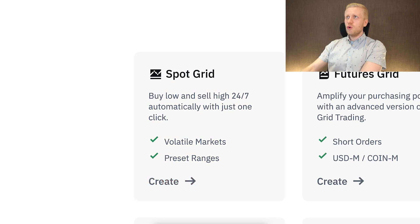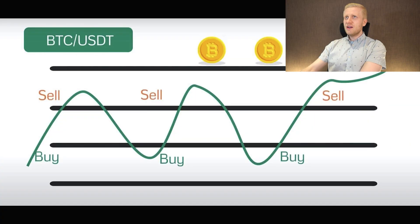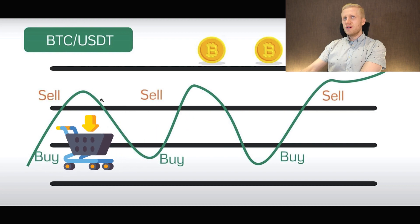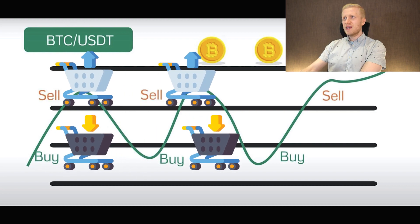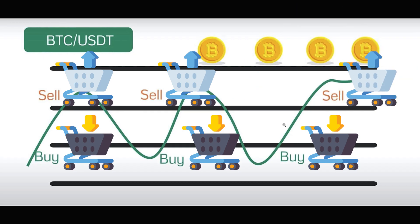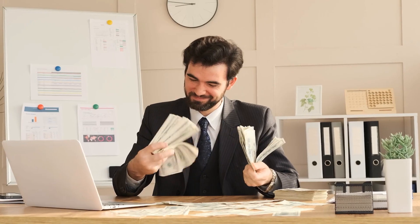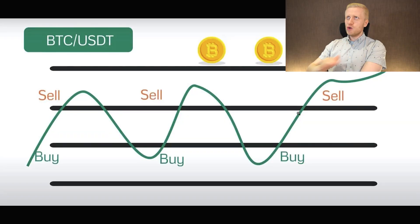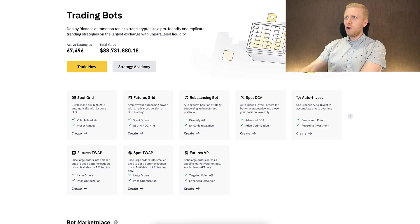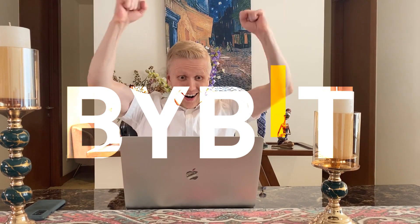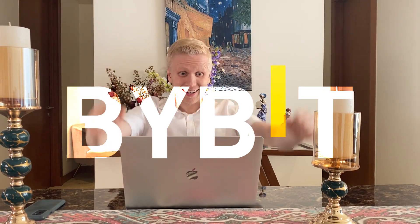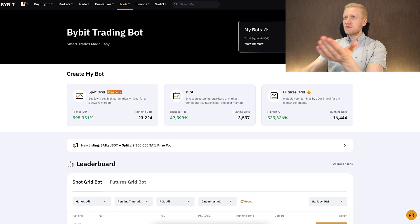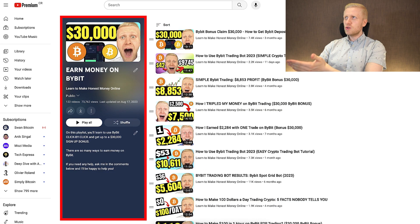The SpotGrid bot is also ultra popular. As shown in the chart, this bot buys low and sells high repeatedly, always profiting the difference. I have personally made money on Binance using the SpotGrid bot, and I have also made money with the SpotGrid bot on Bybit, as you've seen in my Earn Money on Bybit playlist.